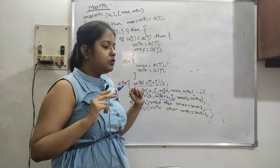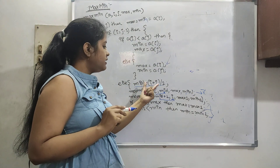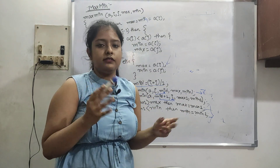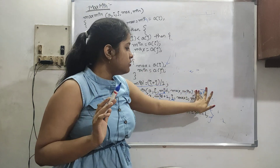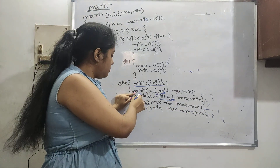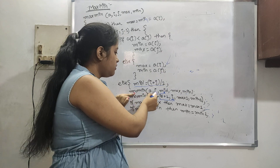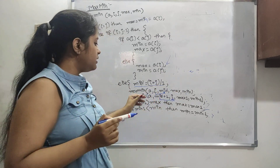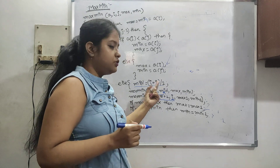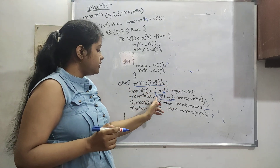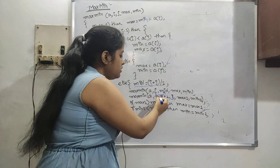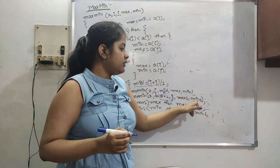If there are more than two elements, we find the mid element: mid = (i + j) / 2, like in binary search. Then we call the function recursively: the first recursive call runs from i to mid.